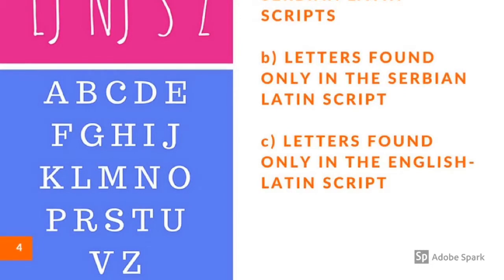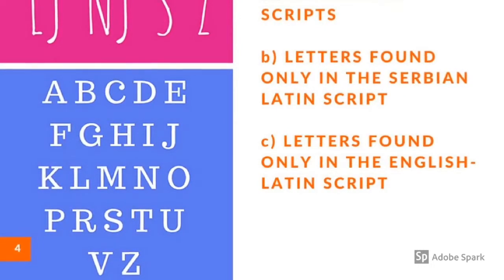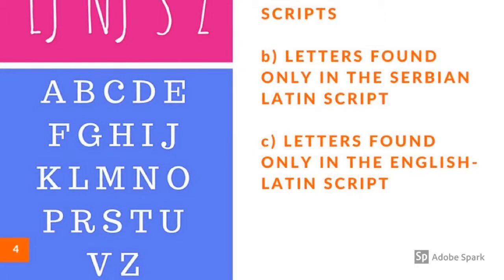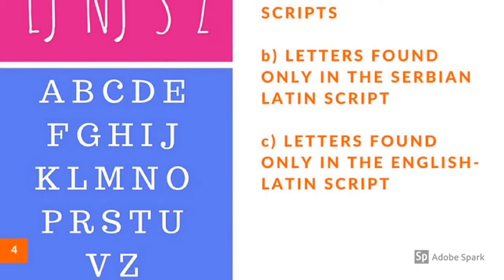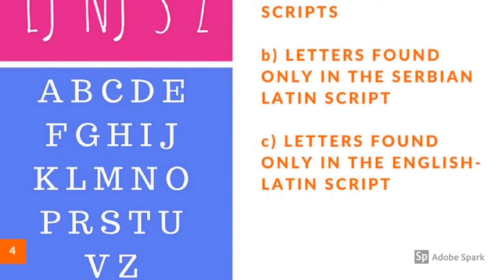The third box represents the letters that are the same in both Serbian and English scripts. Not all of them represent the same sounds, but their shapes are the same.